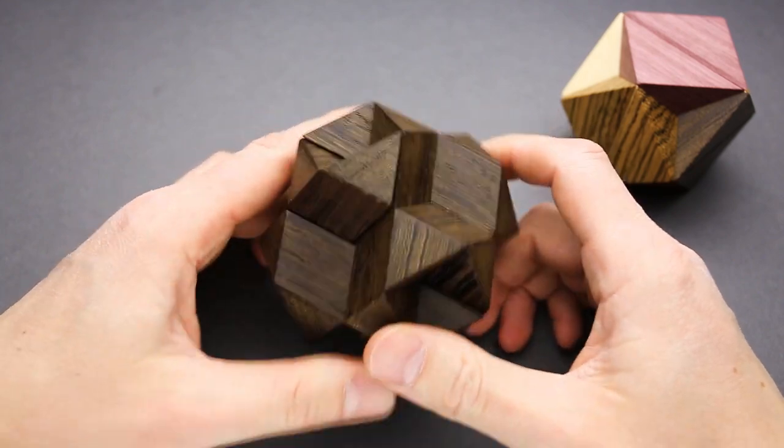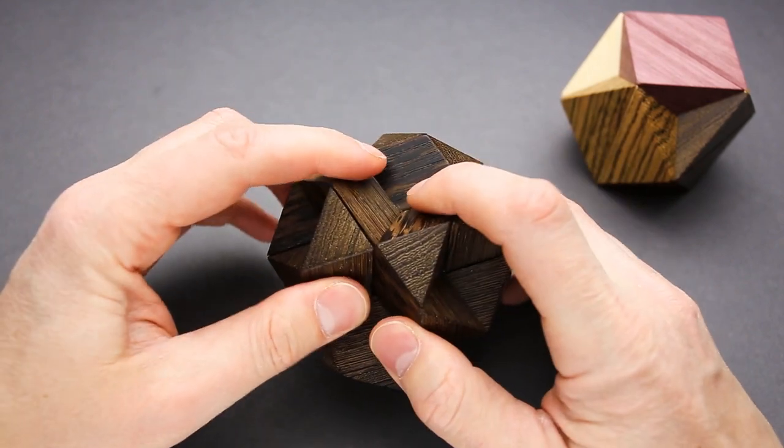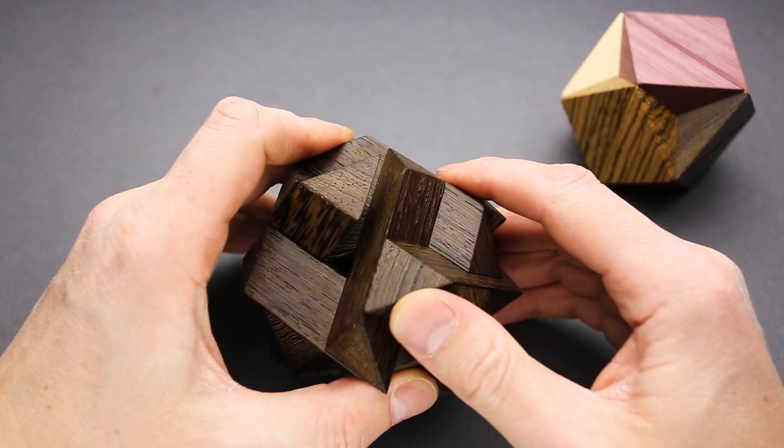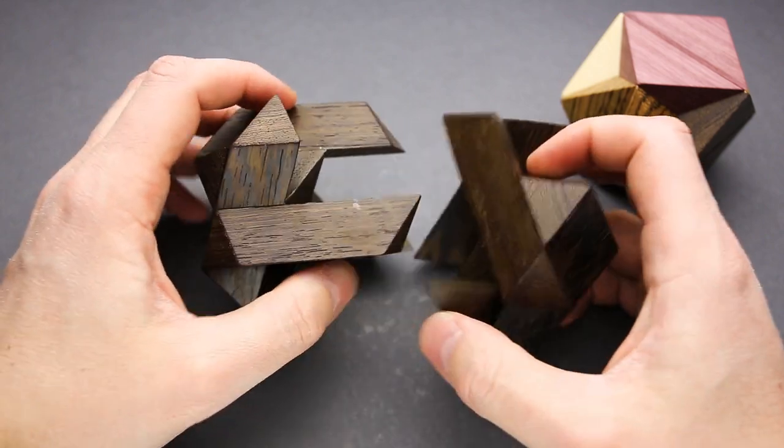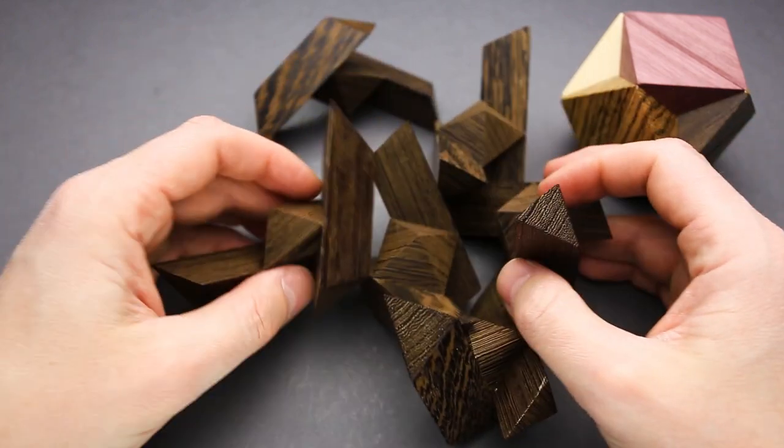So here we have a puzzle made from Wenge. There are six pieces here and I have to find a way how to take it apart. Oh, I found it already. Okay.